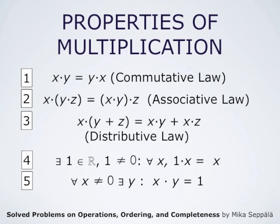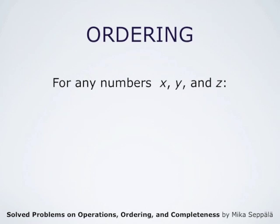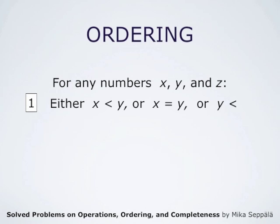Within the set of real numbers, numbers are ordered. So for any numbers x and y, either x is less than y, or x equals y, or y is less than x. Secondly, if x is less than y and y is less than z, then necessarily x must also be less than z.